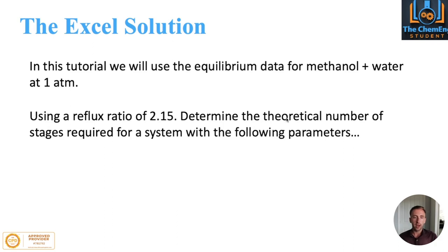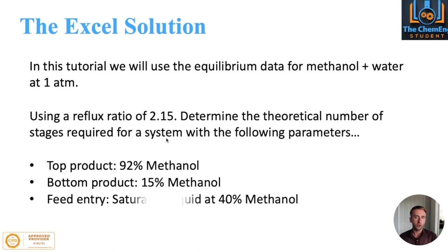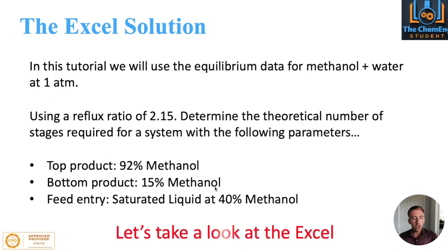In this example, we're going to look at the equilibrium data for a methanol-water system operating at one atmosphere. We're told to use a reflux ratio of 2.15, and we want to determine, using the McCabe-Thiel method, the theoretical number of stages required to achieve: a top product of 92% methanol, a bottom product of 15% methanol, and a saturated liquid feed containing 40% methanol. Let's come across to our Excel sheet.